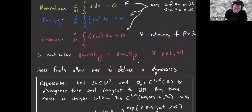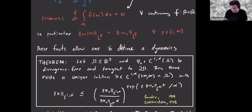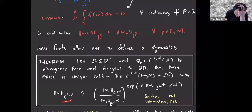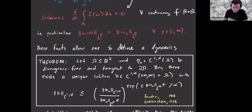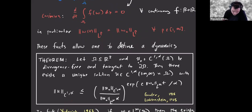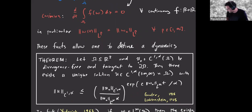Because of this conservation, you can define the dynamics for all time. It's a classical result that if you start with C^{1,α} initial velocity, which is divergence-free and tangent to the boundary, then there's a unique solution in the same space. Moreover, it enjoys some bound which degenerates quite rapidly in time — there's this famous double exponential growth. Although the motion is defined for all time, things can behave very badly at infinity, at least if you look in topologies like C^{1,α}.